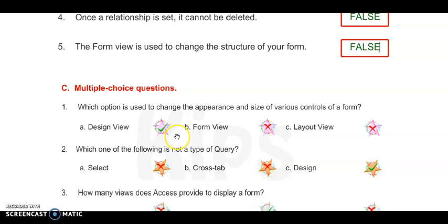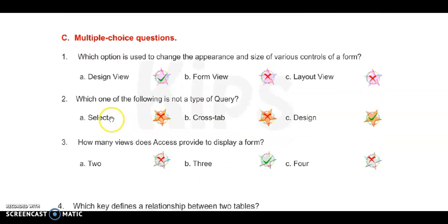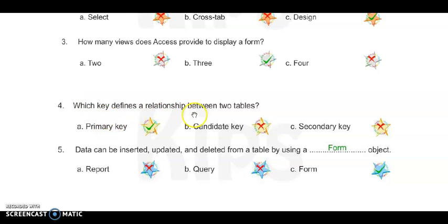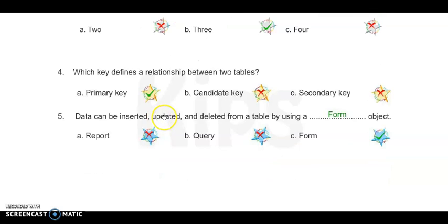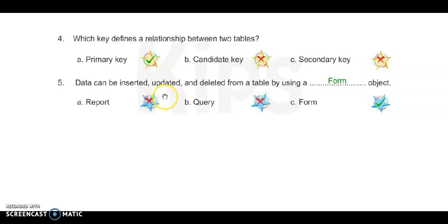Now move on to next exercise, multiple choice questions, Exercise C. First: which option is used to change the appearance and size of various controls of the form? It is Design View. In the Design View only we can change the appearance and sizes of the form. Number two: which one of the following is not a type of query? It is Design. Select is a query, crosstab is a query, but Design is not a query, it is a view. Number three: how many views does Access provide to display a form? It is three views. Number four: which key defines the relationship between two tables? It is Primary Key. With the primary key only we can create the relationship between two tables. Number five: The data can be inserted, updated, and deleted from a table by using a Form object. In the form you can delete, update, or insert any data in the table only in the form.